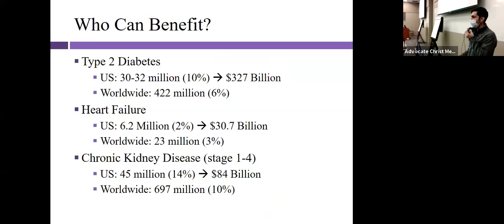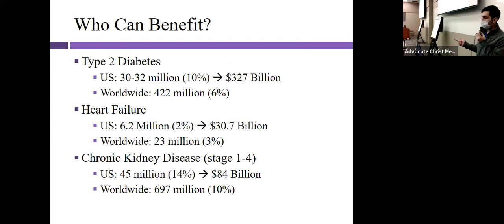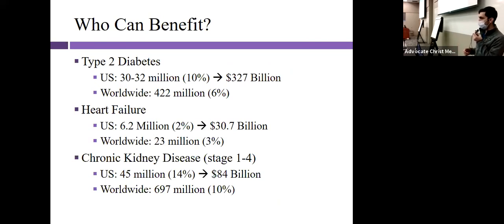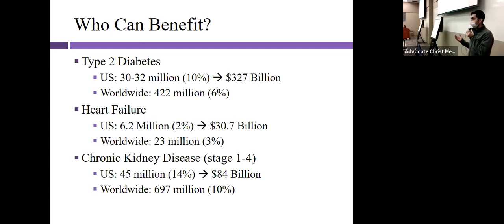Who stands to benefit? The three big categories are: people with type 2 diabetes, people with heart failure and cardiovascular disease, and people with chronic kidney disease. The numbers over the past decades have steadily been increasing. The most recent data says that in the U.S. we have about 30 to 32 million people suffering from type 2 diabetes — about 10% of our population — translating to a $327 billion cost to the U.S. healthcare system.